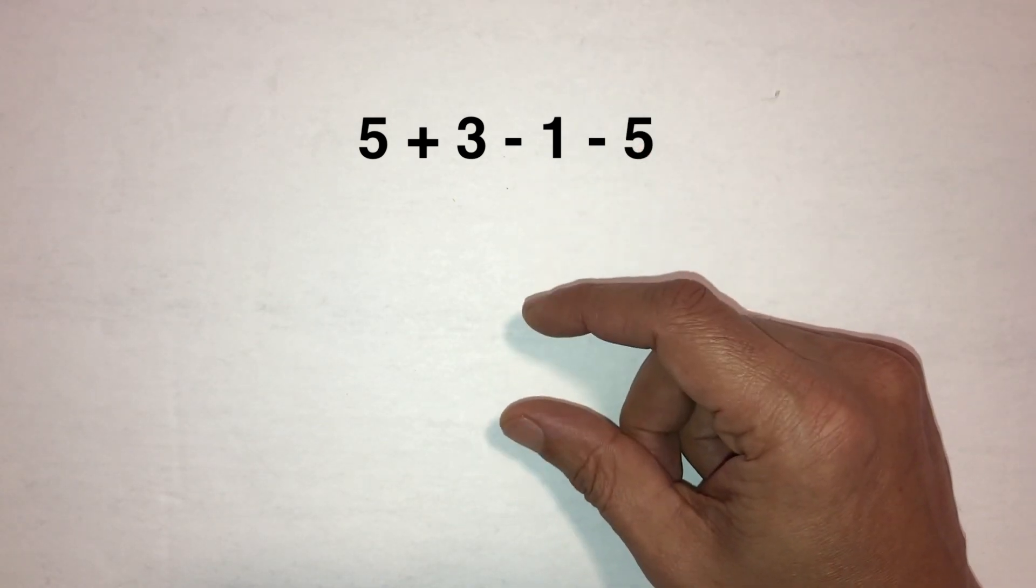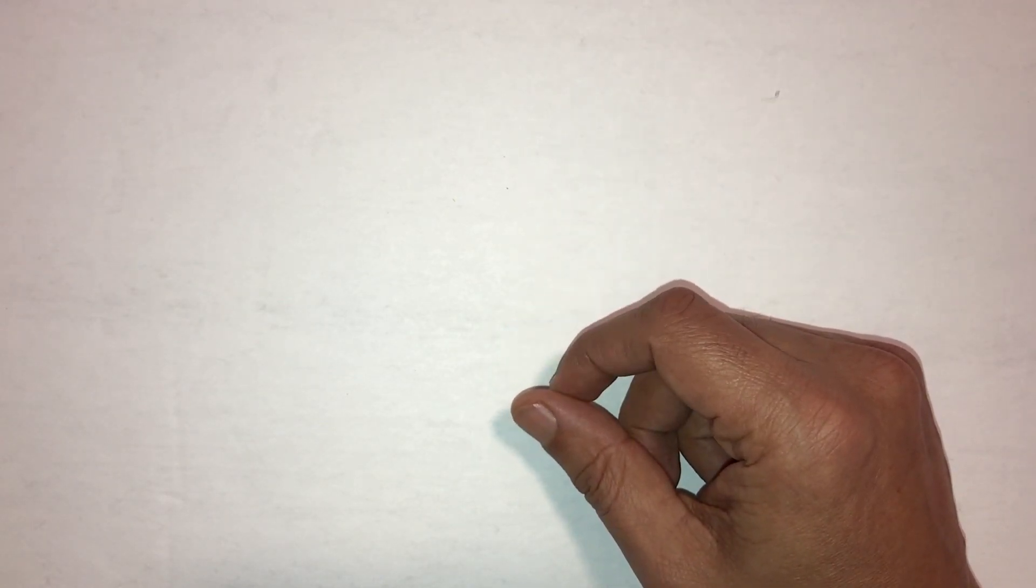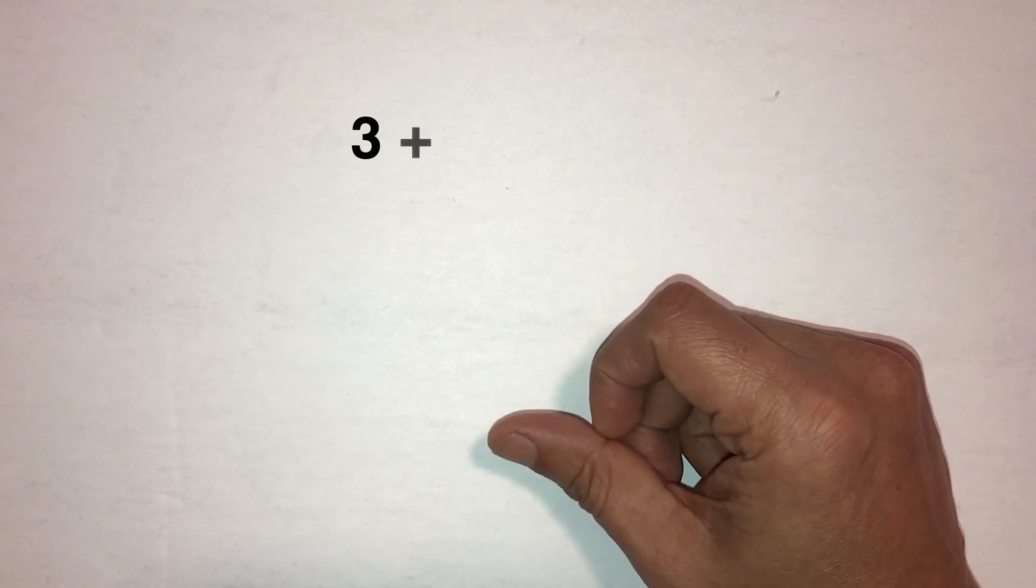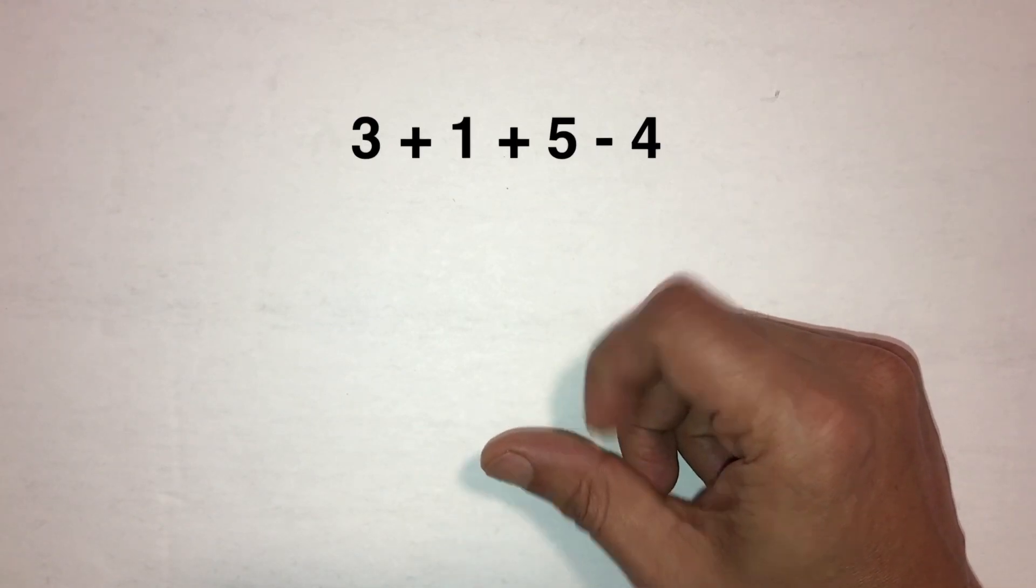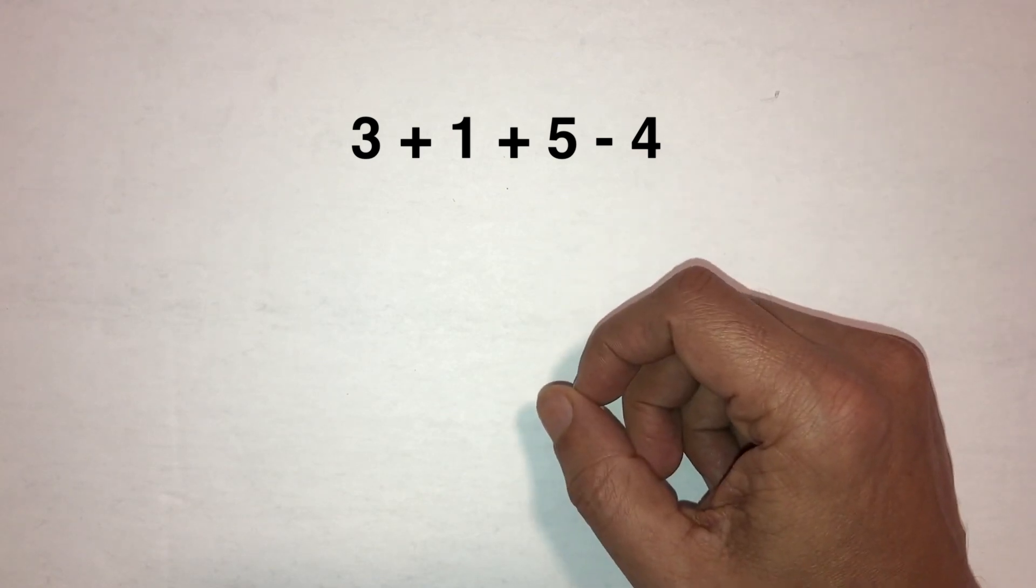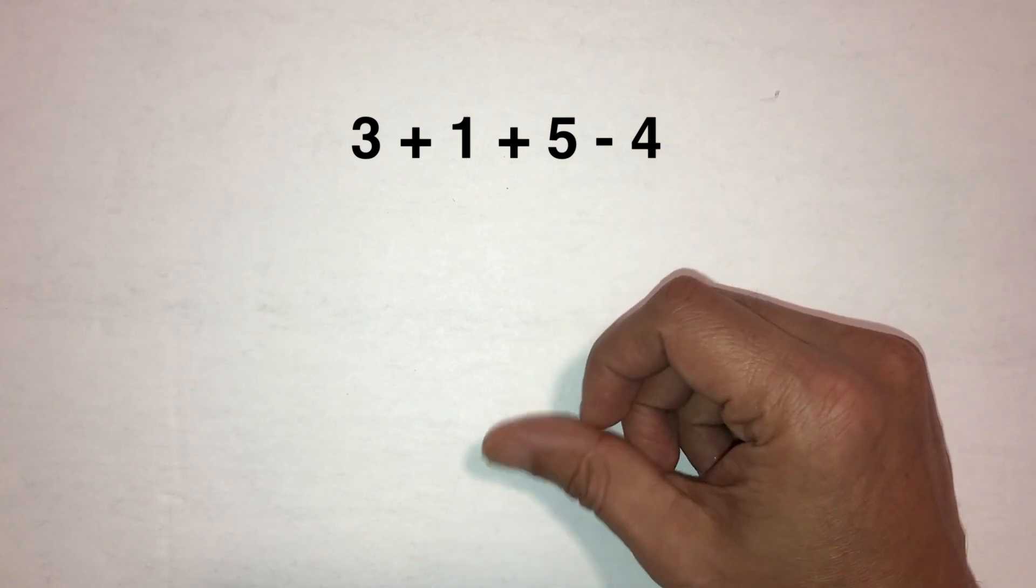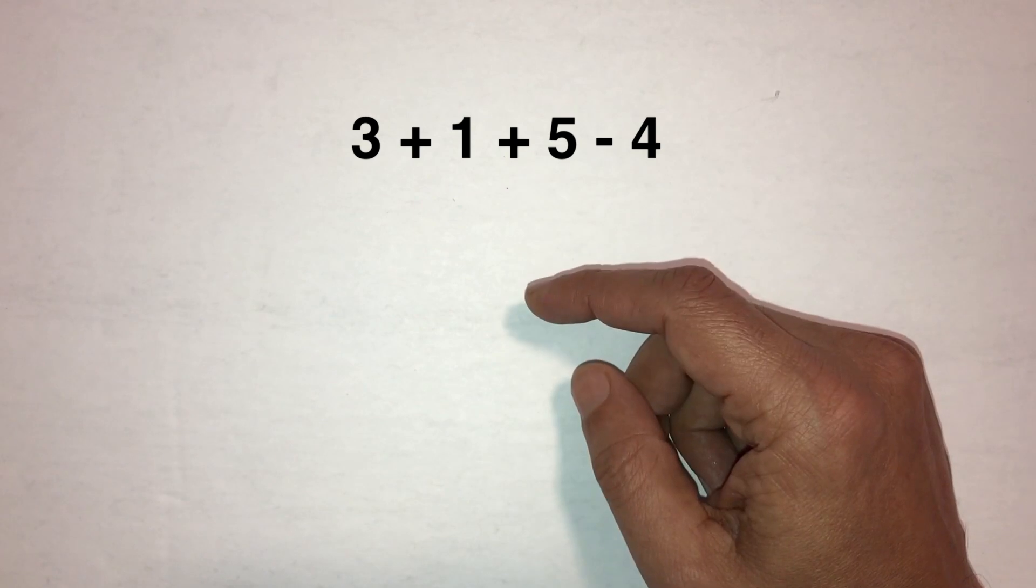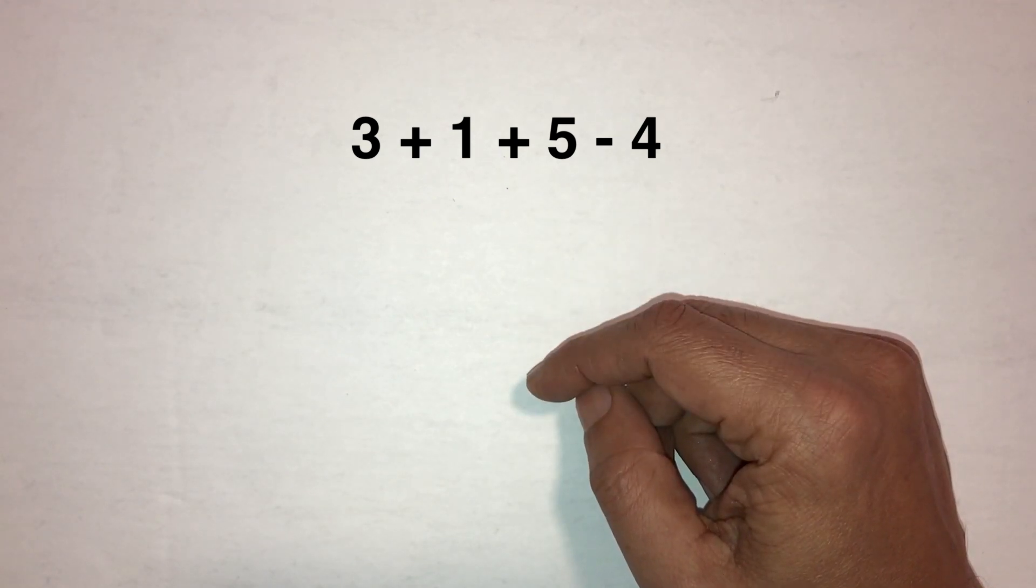Now let's try another one with the upper beads. 3 plus 1 plus 5 minus the 4, we're left with the 5. Do that one again: 3 plus 1 plus 5 minus the 4, answer is 5.